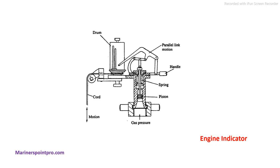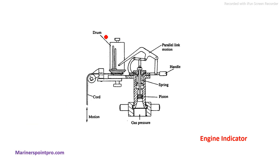This is a diagram of an engine indicator. With this indicator we can draw indicator diagrams on the drums. The light spring diagram and indicator card diagram are recorded on this drum. The gas pressure comes from this side — this is the spring, this is the piston — so just remember all these parts.